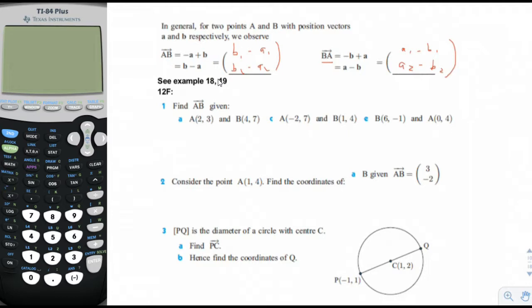Find AB given that A is 2,3 and B is 4,7. Basically we just have to subtract the A coordinates from the B coordinates. So it's equal to 2 over 4.